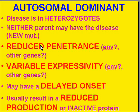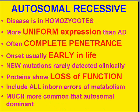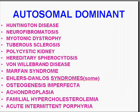The key features of autosomal dominant diseases are: reduced penetrance, variable expressivity, delayed onset, and reduced production — which differentiate it from autosomal recessive, which is generally the opposite in all these areas. Now let's look at the list of common autosomal dominant diseases.